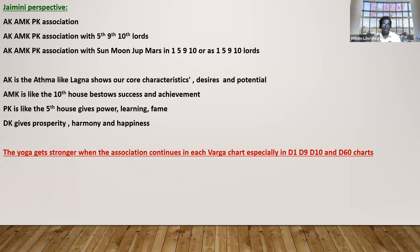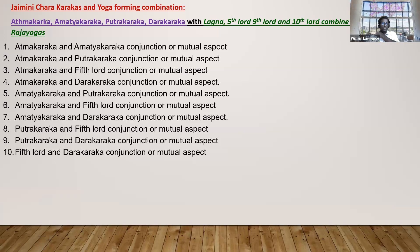For beginning learning, find out whether Kendra-Kona lords are conjoined together and one of them is the Atmakaraka, Amityakaraka, or Putra Karaka. It breaks down like this: Atmakaraka and Amityakaraka in conjunction or mutual aspect; Atmakaraka and Putrakaraka in mutual aspect; Atmakaraka and the 5th lord in conjunction or mutual aspect; Atmakaraka and Darakaraka in conjunction or mutual aspect.